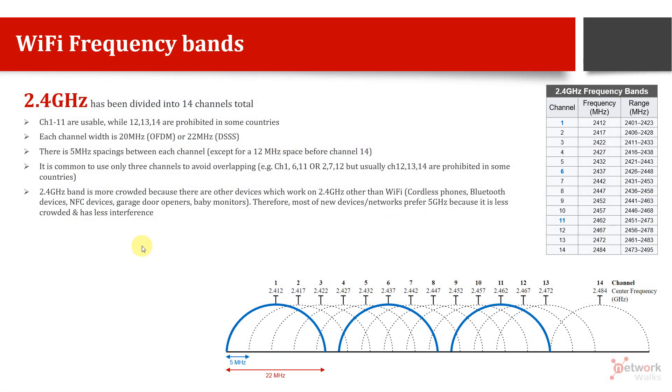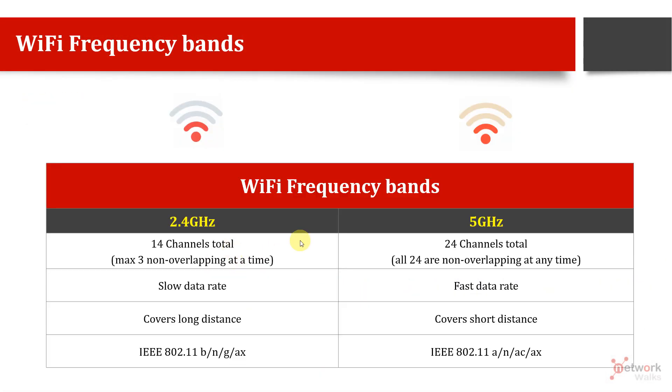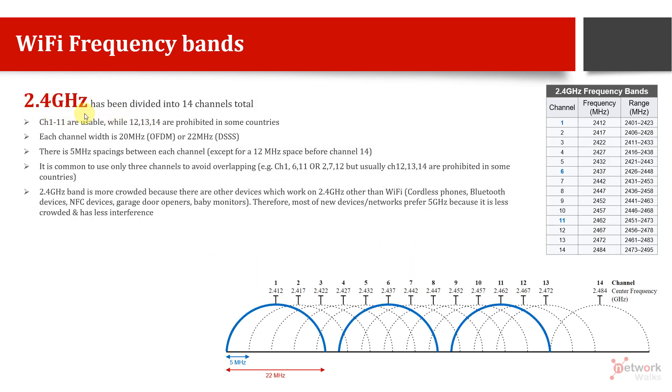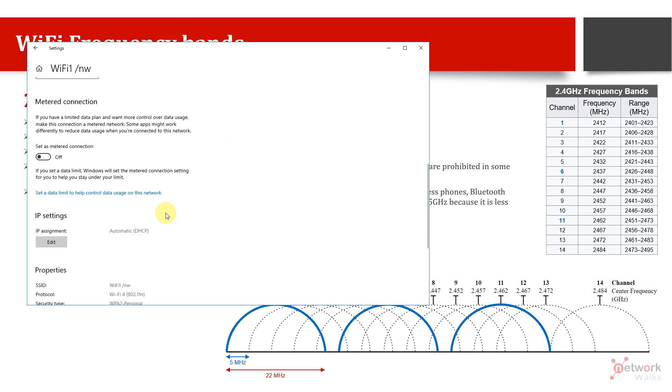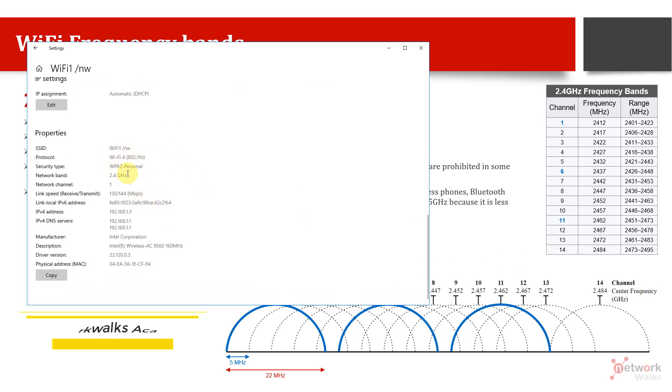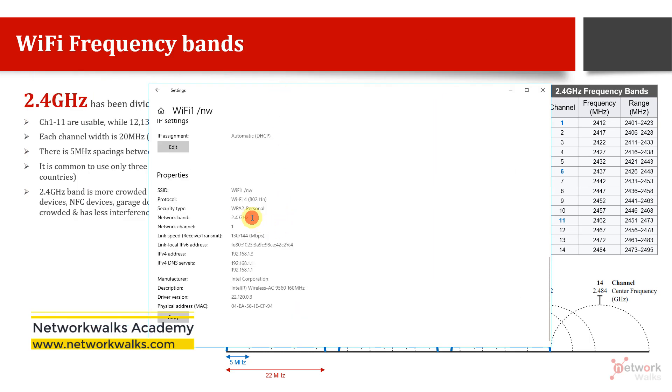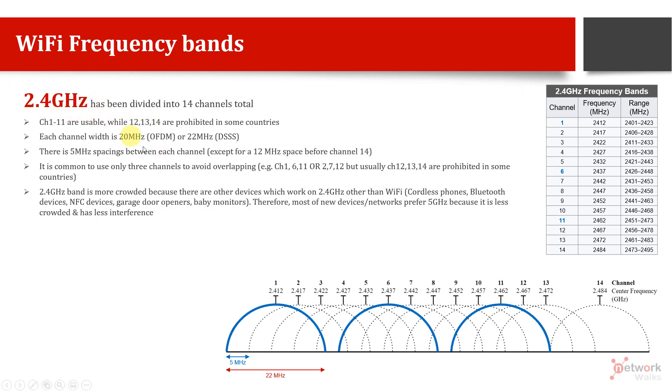In the previous video, we discussed that WiFi has two bands, two ISM bands: 2.4 gigahertz and 5 gigahertz. So let's discuss what is the significance of 2.4 gigahertz.